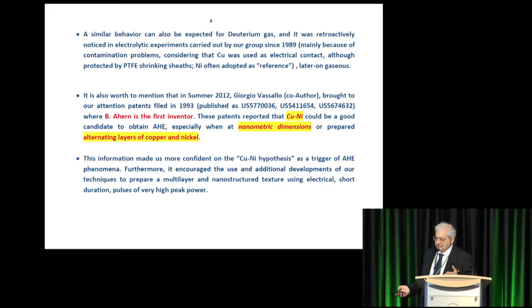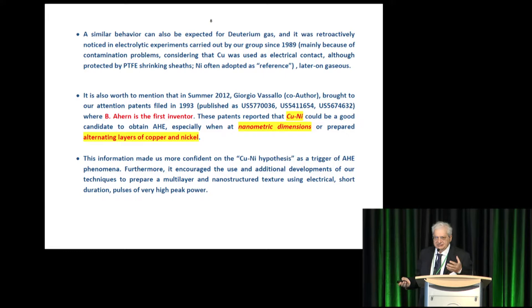Moreover, in summer 2012, we want to know that the Brian Iron has filed a patent that they say the copper-nickel is a good candidate to obtain a known heat, especially at a nanometric dimension or alternating layers of copper-nickel. So, it was what we are doing.